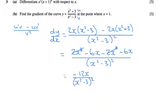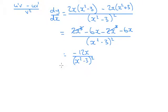Once the value of the gradient when x equals 1, so we can now substitute 1 into that. Negative 12 on the top with 1 take 3 all squared on the bottom.